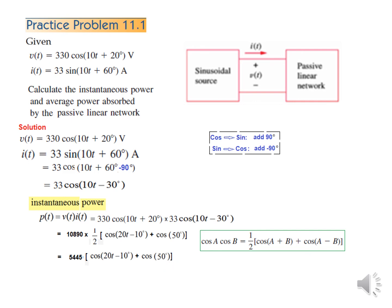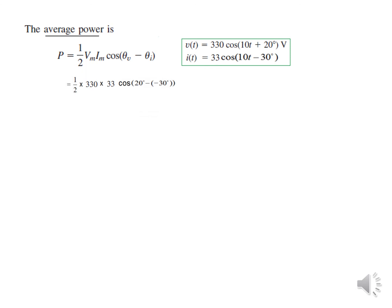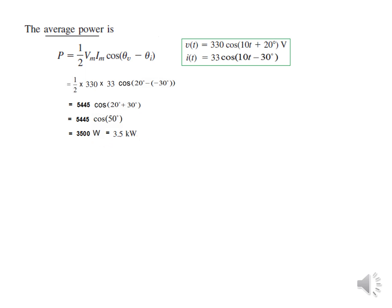Applying the same trigonometric technique and solving step by step, we obtain the constant term of 3500 W (3.5 kW) and the variable term of 5.45 kW, giving the full instantaneous power expression. Using the average power formula with V_m = 330, I_m = 33, and the respective phase angles, we compute P = ½ × 330 × 33 × cos(θ_v − θ_i) = 3.5 kW, confirming the answer.